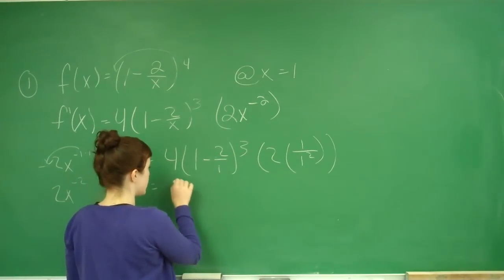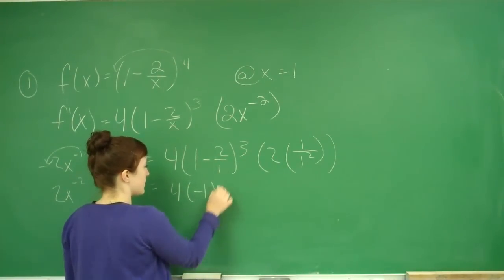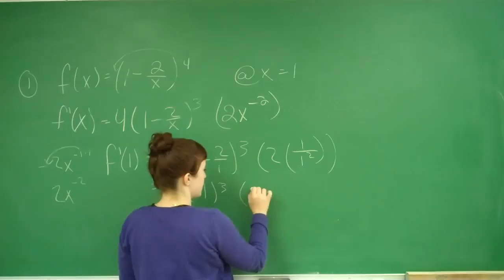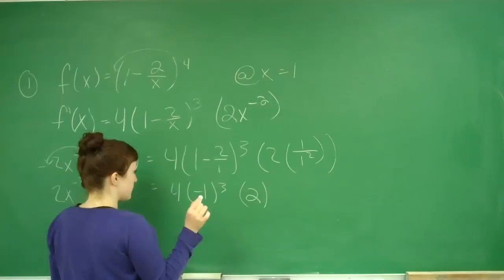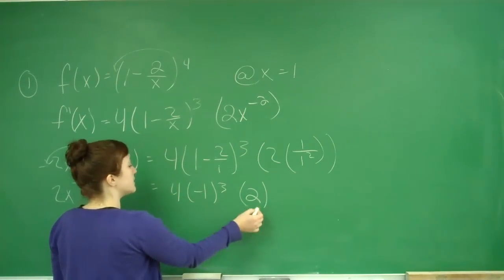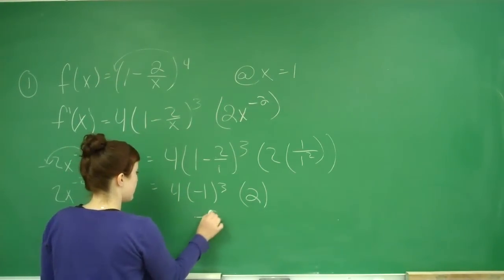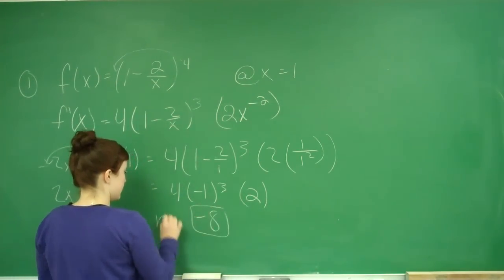1 minus 2 is -1. This will be 2 times 1 which is 2. (-1)^3 is -1, times 4 is -4, times 2 is -8. So this is our slope.